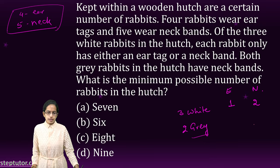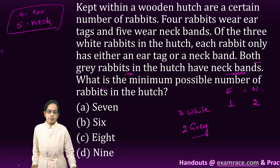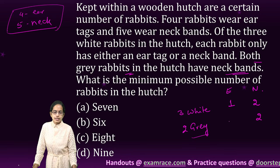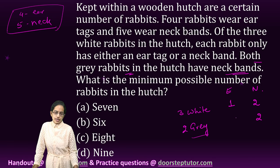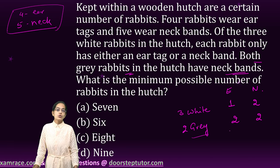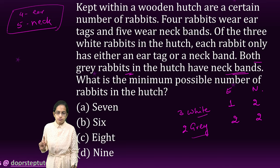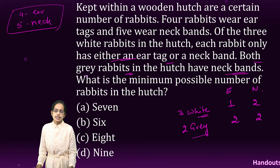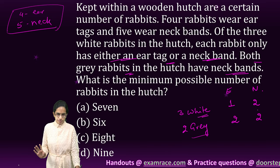For the two gray rabbits, both have neck bands. Along with the neck band, it is not stated whether they can have anything else. That means they can also have ear tags — we can assign two ear tags to these two gray rabbits. But for white rabbits, it's clearly stated they would have either an ear tag or a neck band.